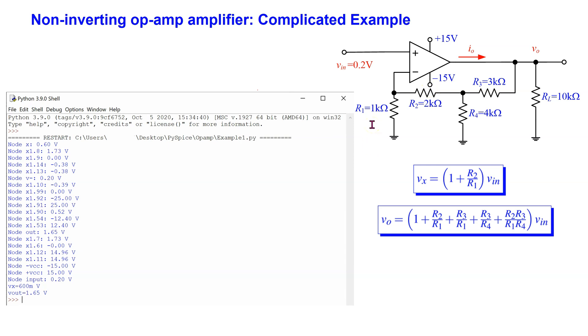It is also possible to do a transient simulation of op-amp amplifier circuits when the input voltage is, for example, a 0.2-volt peak sine wave. This is discussed next.